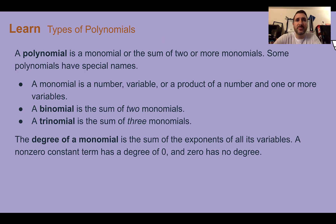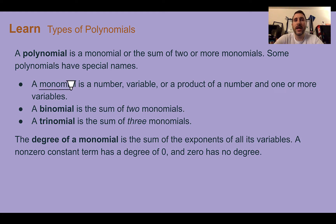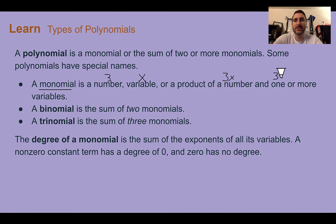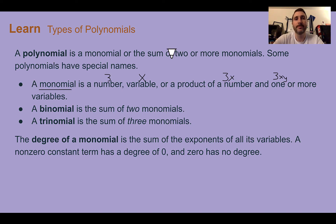Let's learn types of polynomials. A polynomial is a monomial, or the sum of two or more monomials. Some polynomials have special names. First, we have just a monomial, and we could have a number like 3, a variable like x, or a product of a number and one or more variables, so it could be like 3x, or even 3xy. A monomial is only going to have one term, so you're not going to see any plus signs or minus signs in a monomial.